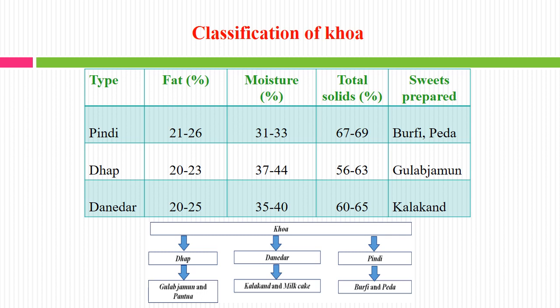Dhaap is another variety which will have total solid 56 to 63%, moisture 37 to 44%, and fat 20 to 23%. This Dhaap is mostly used for Gulab Jamun. The third variety is Dhanedhar, which will have total solid 60 to 65%, moisture 35 to 40%, and fat 20 to 25%. Dhanedhar is used for making Kalakand, another Khoa-based sweet.